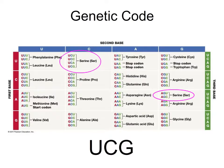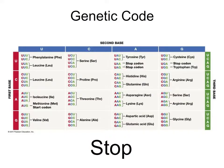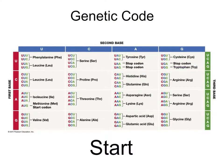We say the genetic code is redundant, because most amino acids have more than one codon that codes for them. This makes sense, as there are only 20 different types of amino acids found in living organisms. Here are the three stop codons, which serve as a signal to stop protein synthesis. In addition, AUG usually serves as the codon that signals the initiation of amino acid polymerization during translation, so most proteins start with the amino acid methionine.